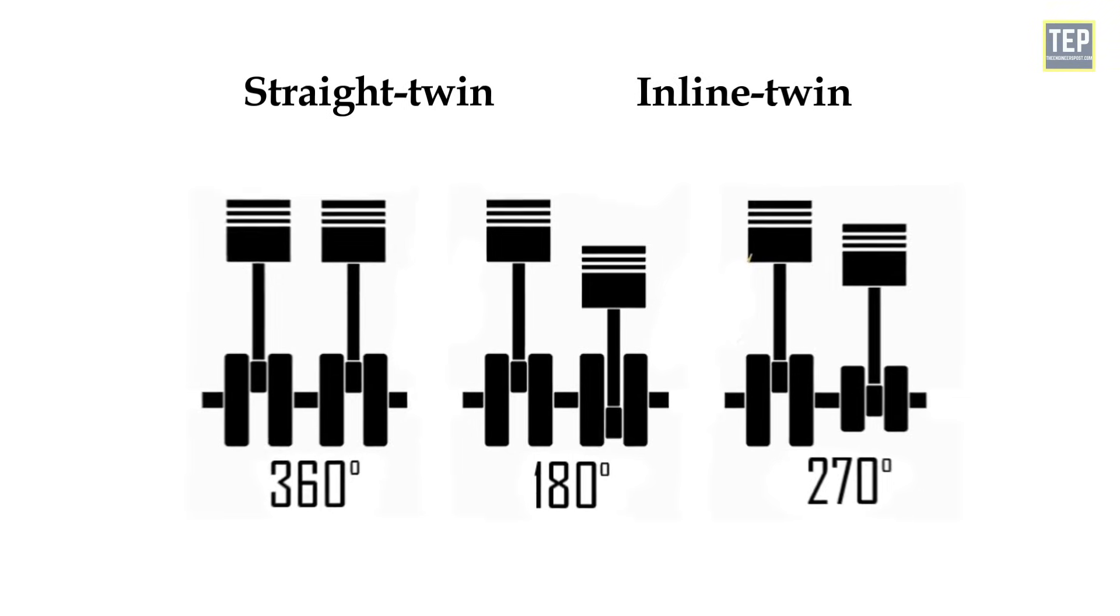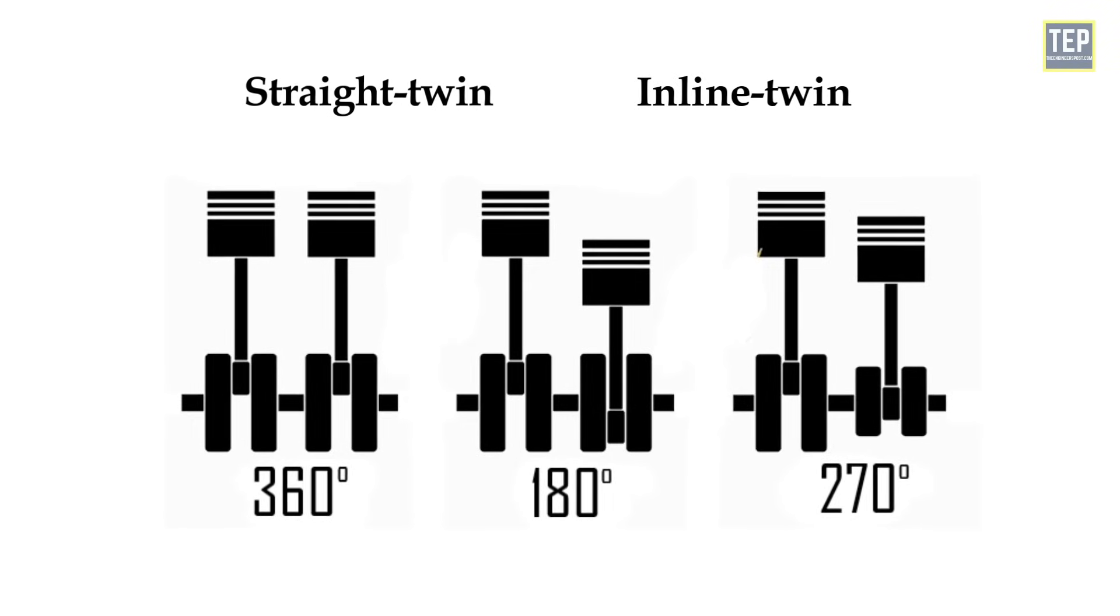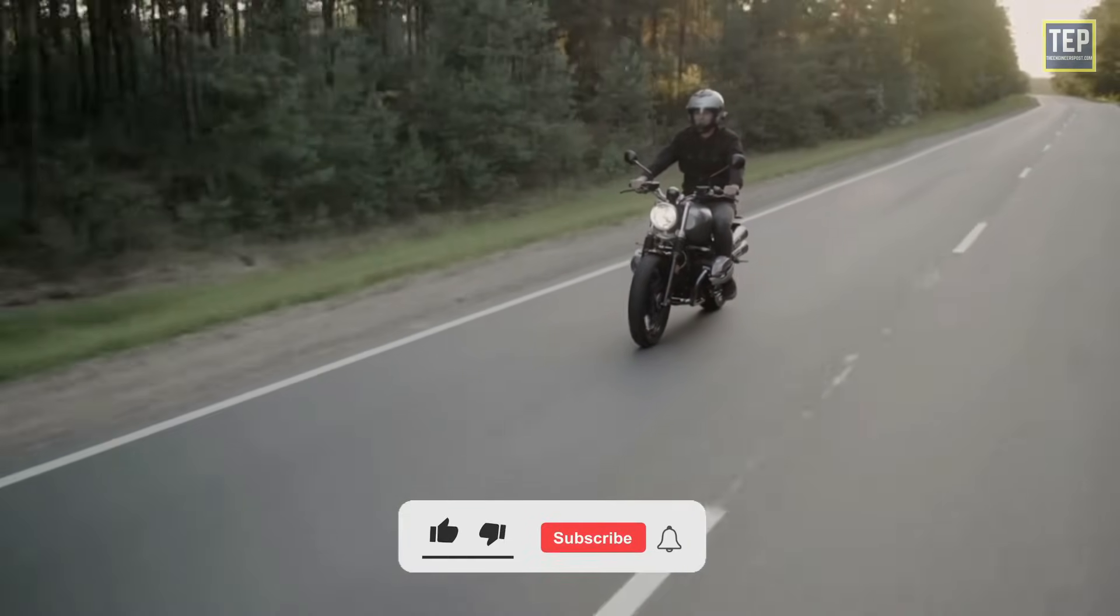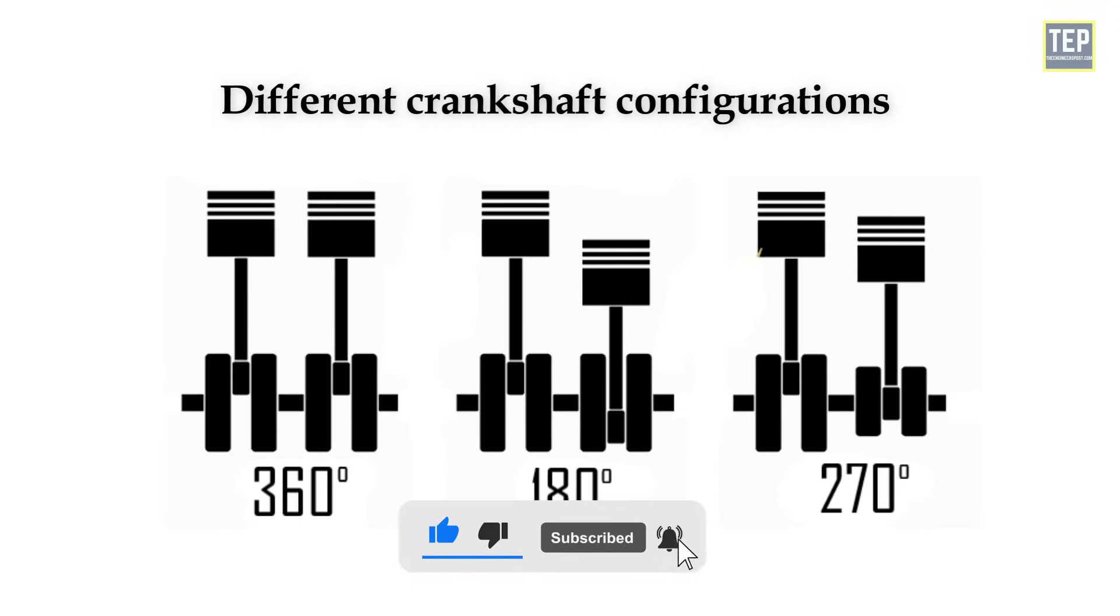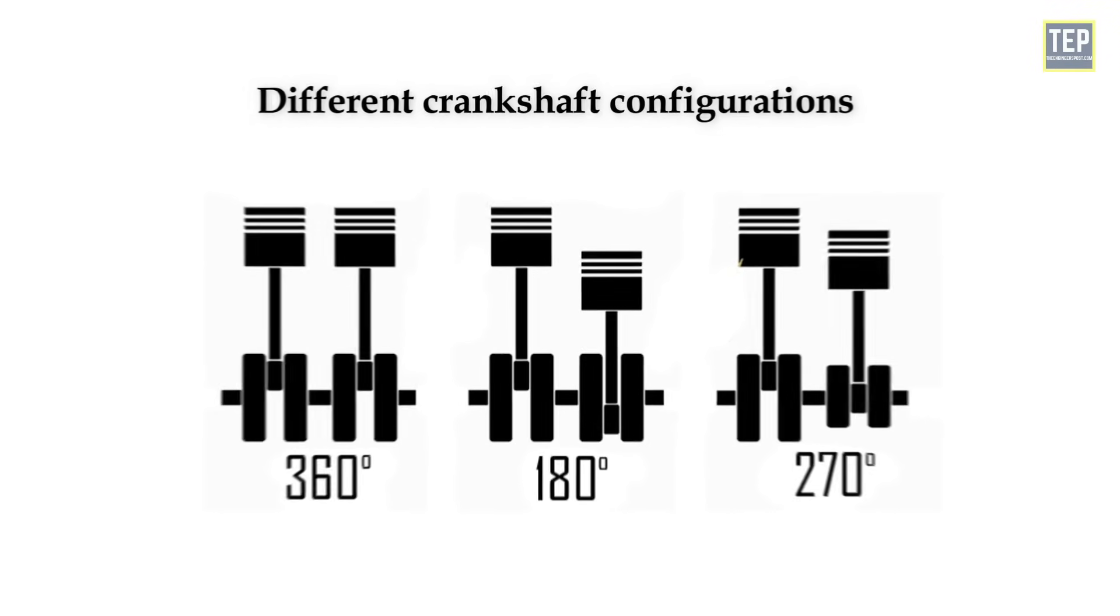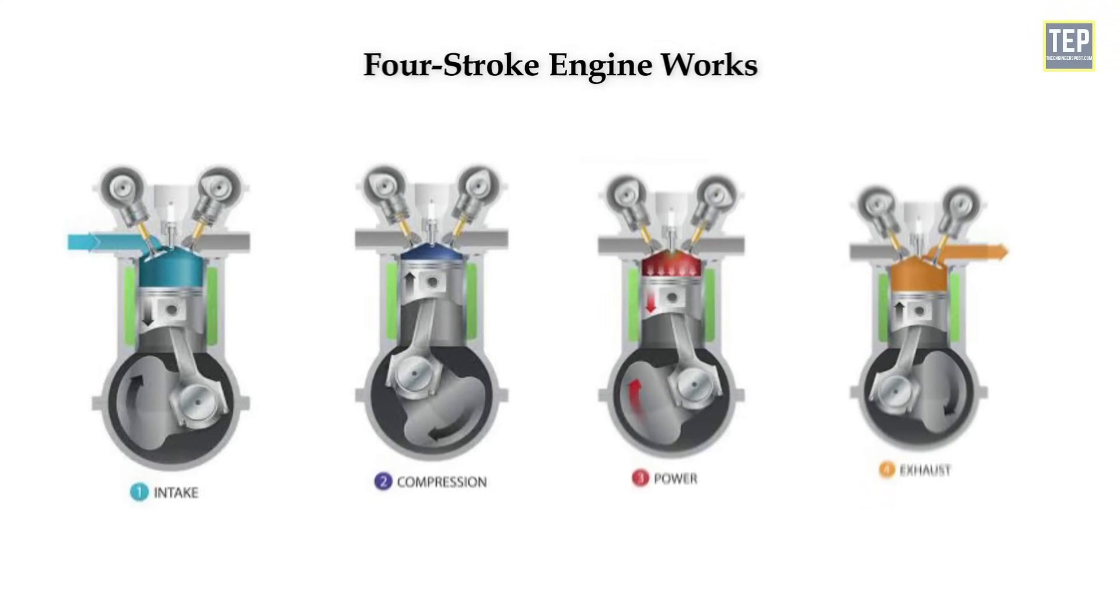The terms straight twin and inline twin were used more generically for any crankshaft angle. So today, in this video, we are looking at different crankshaft configurations and how they are used in the automotive industry. To go over these, let's quickly review how the four-stroke engine works.